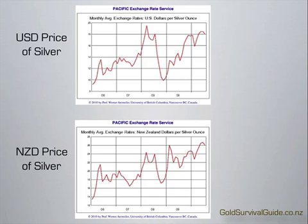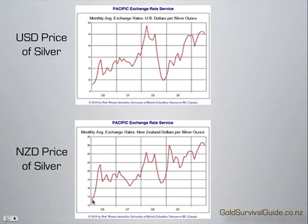Notice that the 50% correction I just mentioned — from around $20 per ounce to around $10 per ounce in US dollar terms — was much less severe in the New Zealand dollar price: from around NZ$24 per ounce to around NZ$17. It was much less severe because this coincides with a time when the New Zealand dollar was actually weakening quite substantially. You see the effect of that is to smooth out the graph somewhat, giving a more steadily rising behavior.